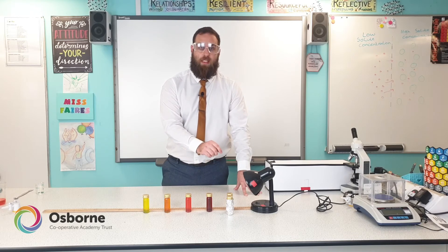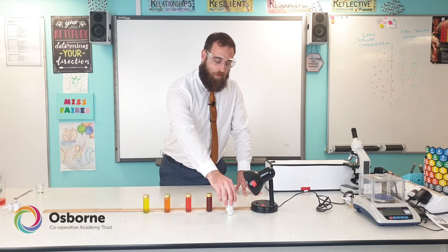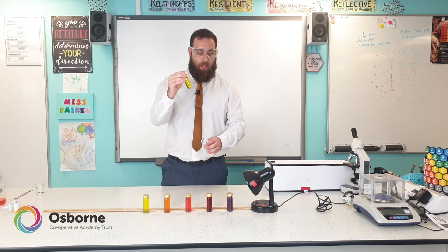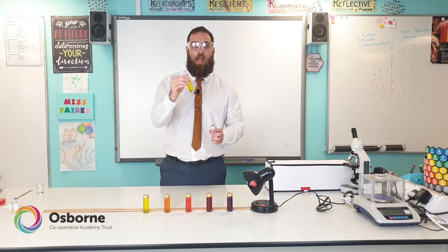To make sure it's light intensity that caused these changes, we look at the control. This bottle had no light at all, so no photosynthesis should have taken place — meaning there should be more carbon dioxide present and it should be more yellow. And as we can see it is very yellow, showing that photosynthesis hasn't taken place in the control, confirming that the changes in the other Bijou bottles are due to the lamp and light intensity.